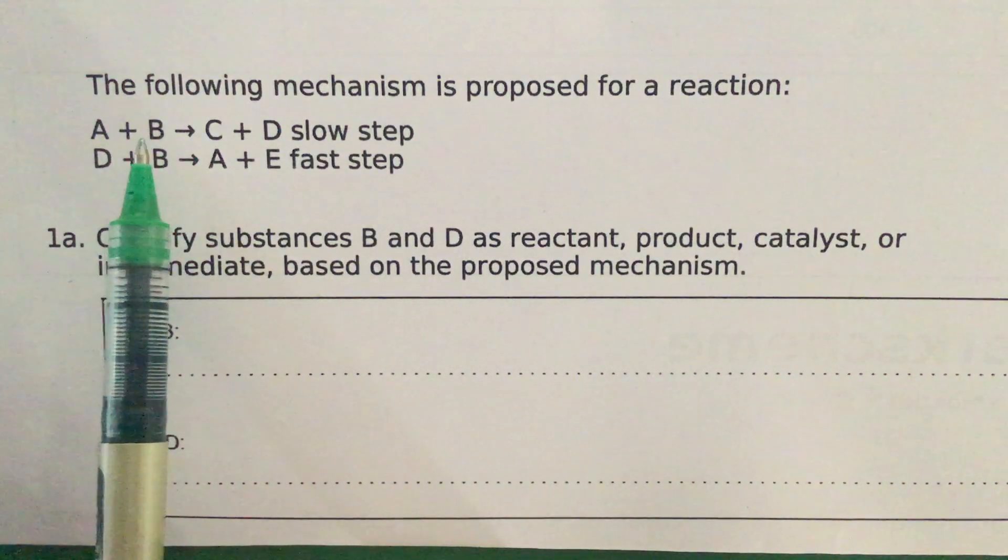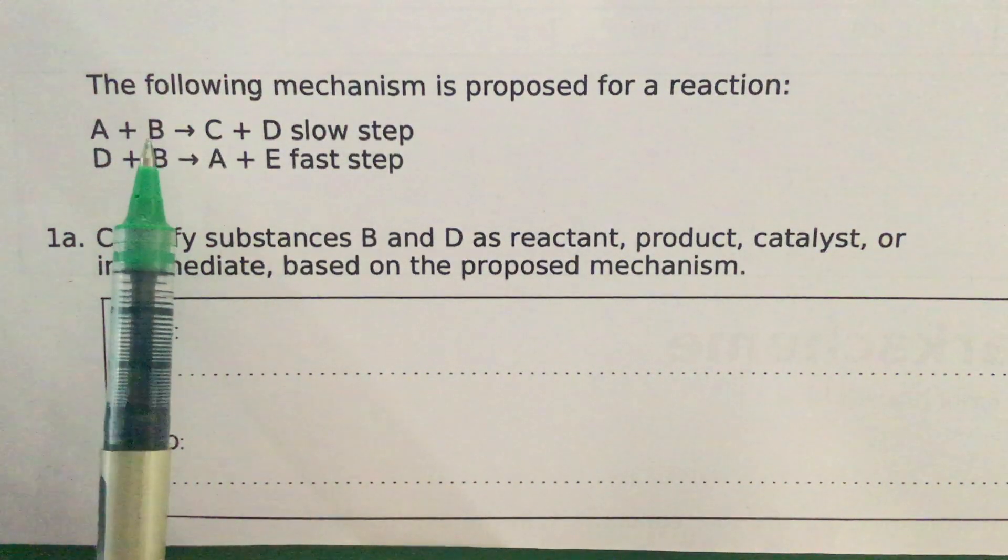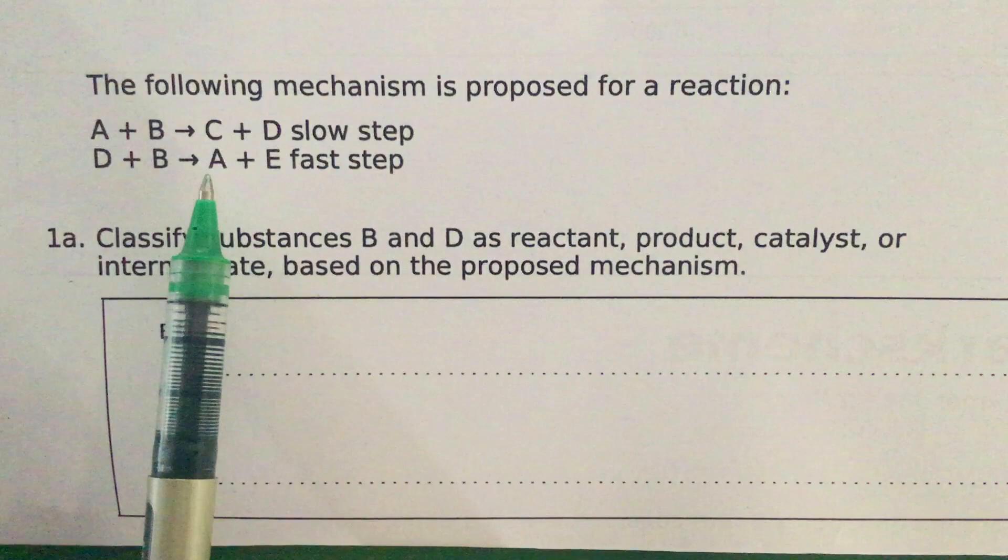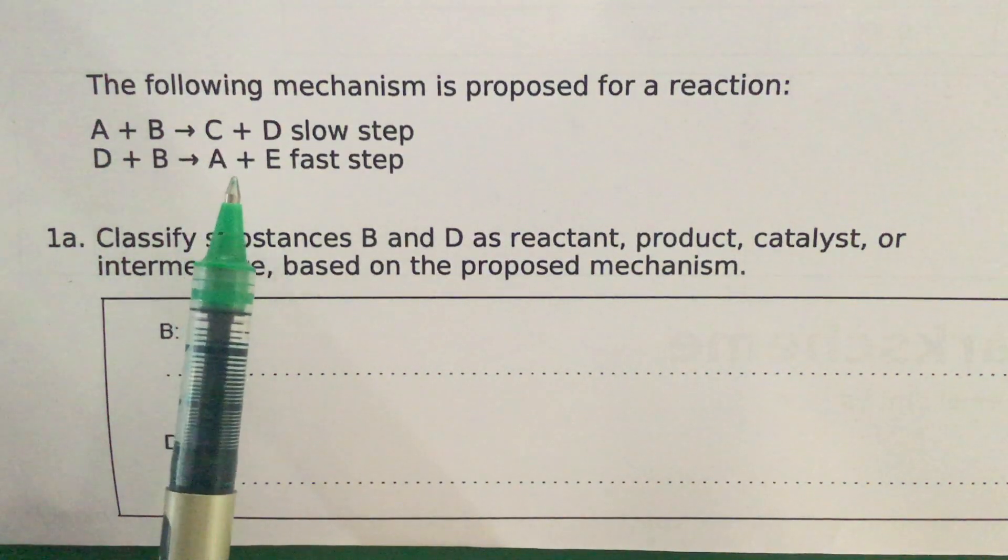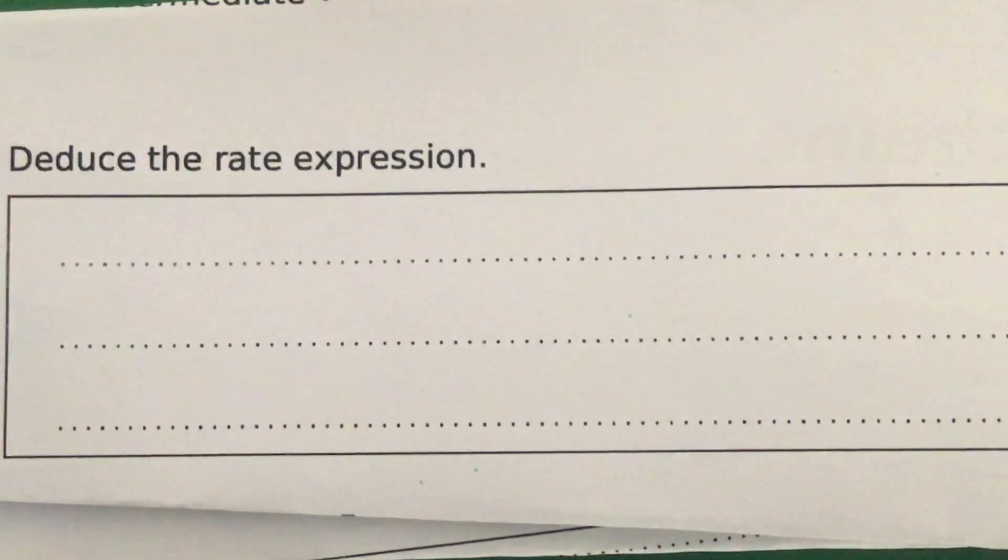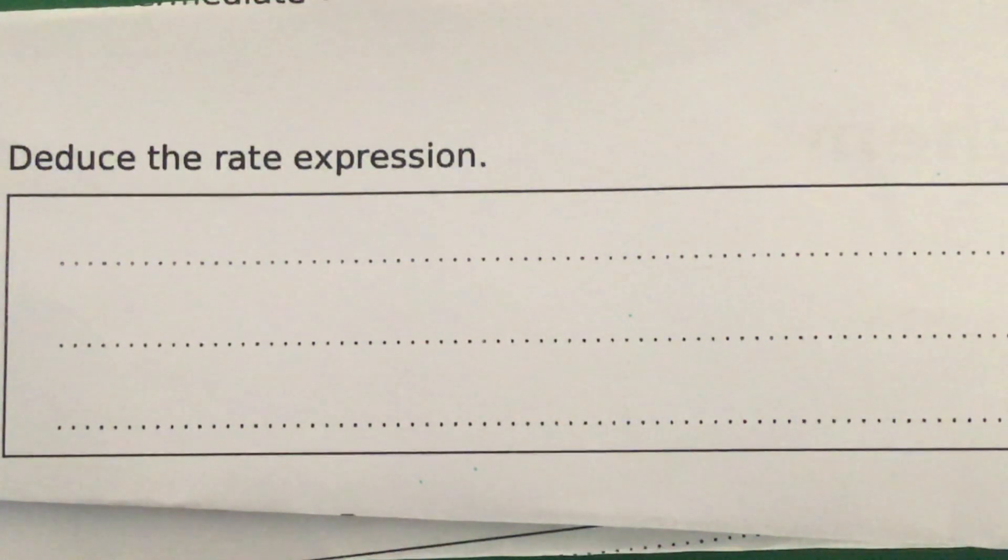taking part in the slow or rate determining step to give you final products of A plus E. Now in this part of the question it says to deduce the rate expression, and this is where the issue arises. If in fact A is a catalyst as we pointed out